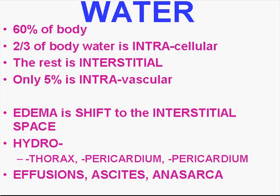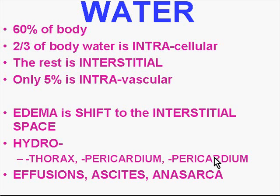Water is about 60% of the body. Most of that — two-thirds — is inside the cells. Only a small portion is in the vascular system and the rest is interstitial. Edema is defined as a shift in body fluid distribution. Increased water in the chest is called hydrothorax; in the pericardial space, hydropericardium; and in the abdominal space, technically hydroperitoneum, though it's more commonly called ascites. Increased fluid in any of these areas is generally called an effusion. Total body edema, which usually results in multiple effusions as well, is classically termed anasarca.